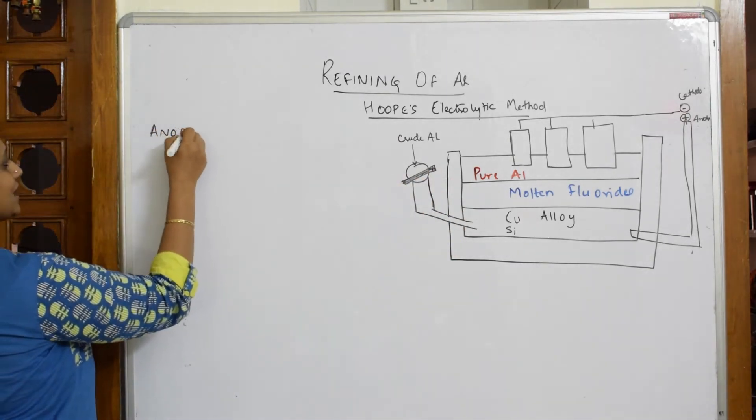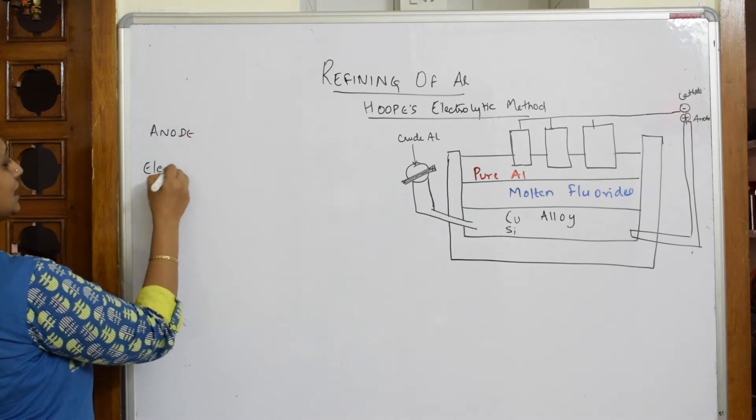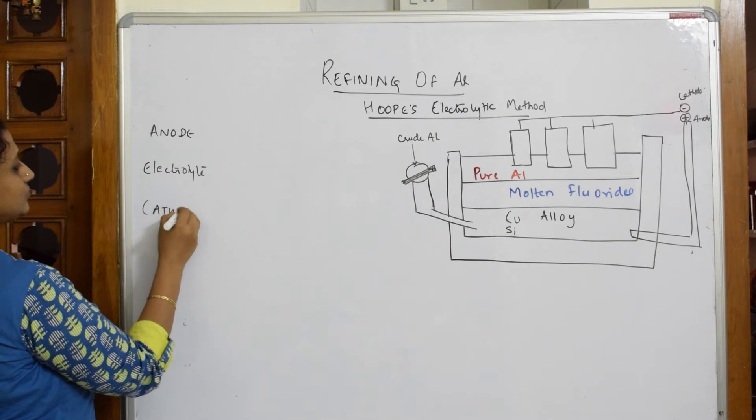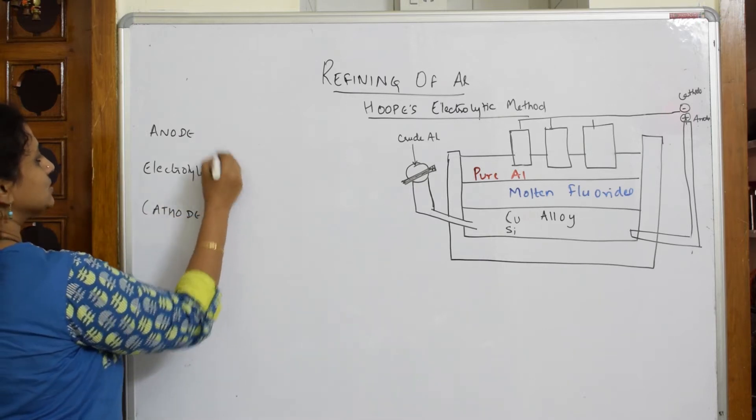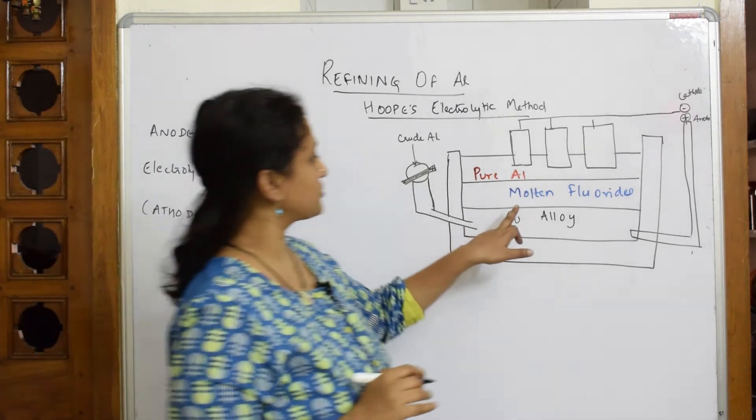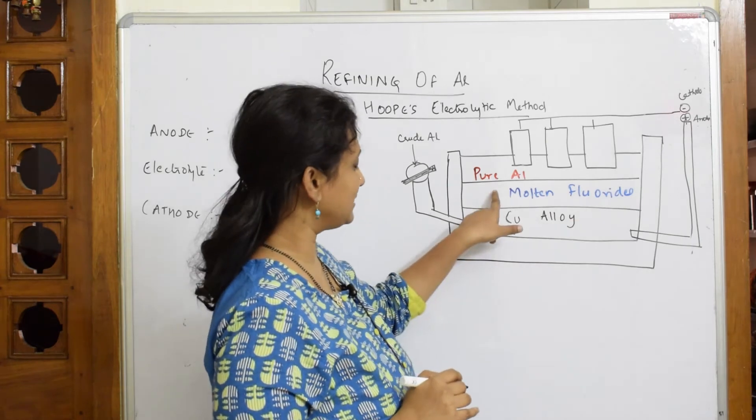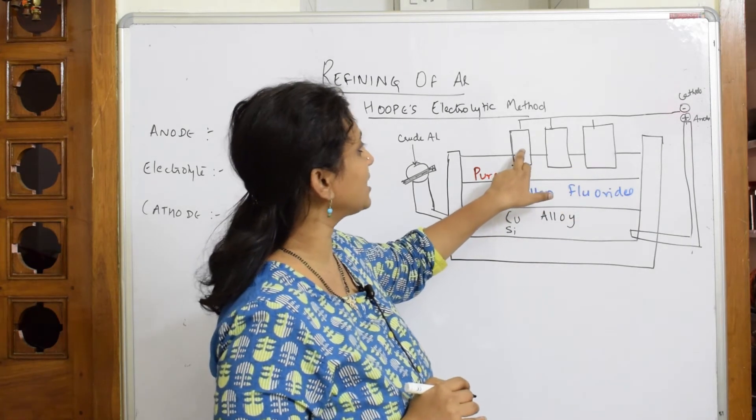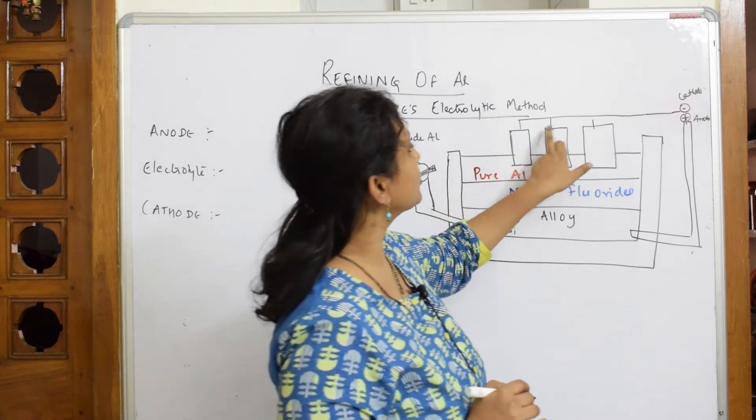This is most important for you all. Now you would have seen the electrolytic cell. In this electrolytic cell, you have three electrodes connected. Where are they connected? All these three electrodes are connected to the external circuit, that is cathode.